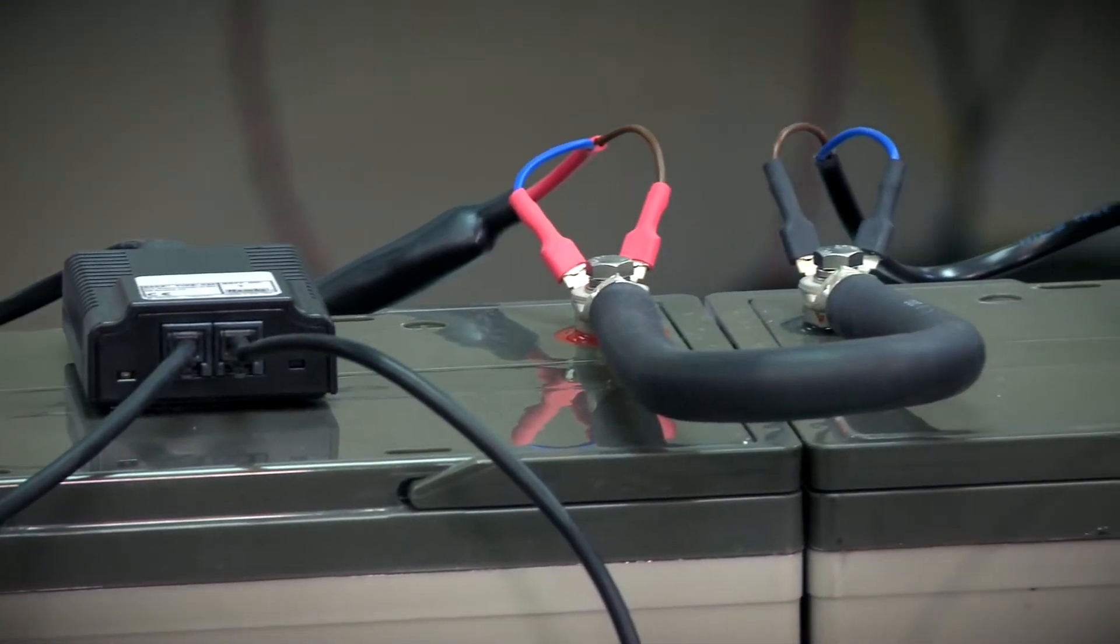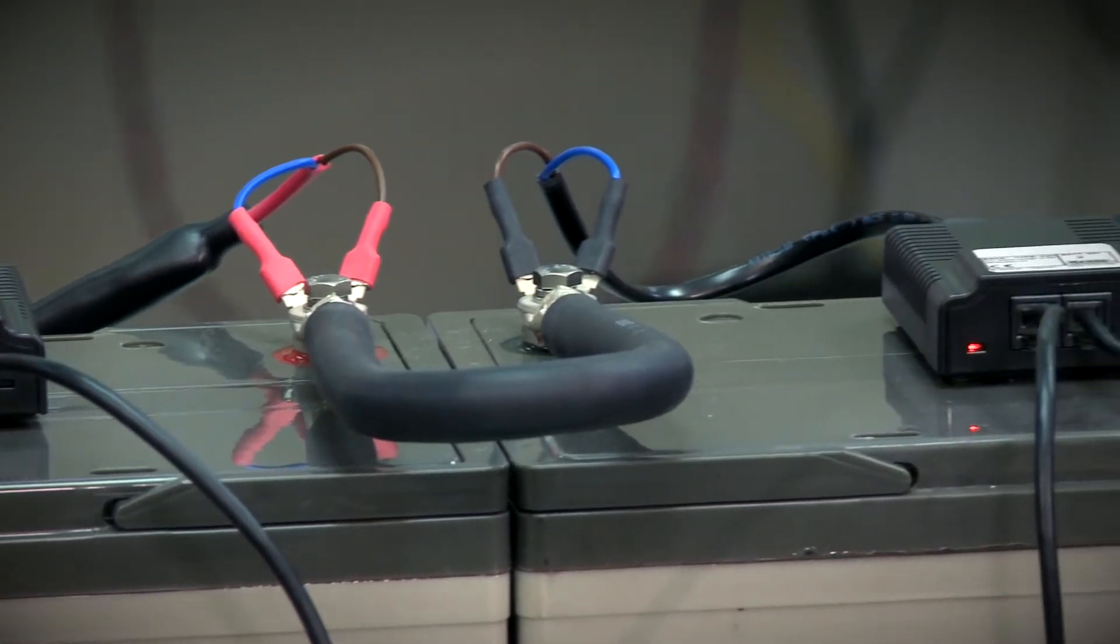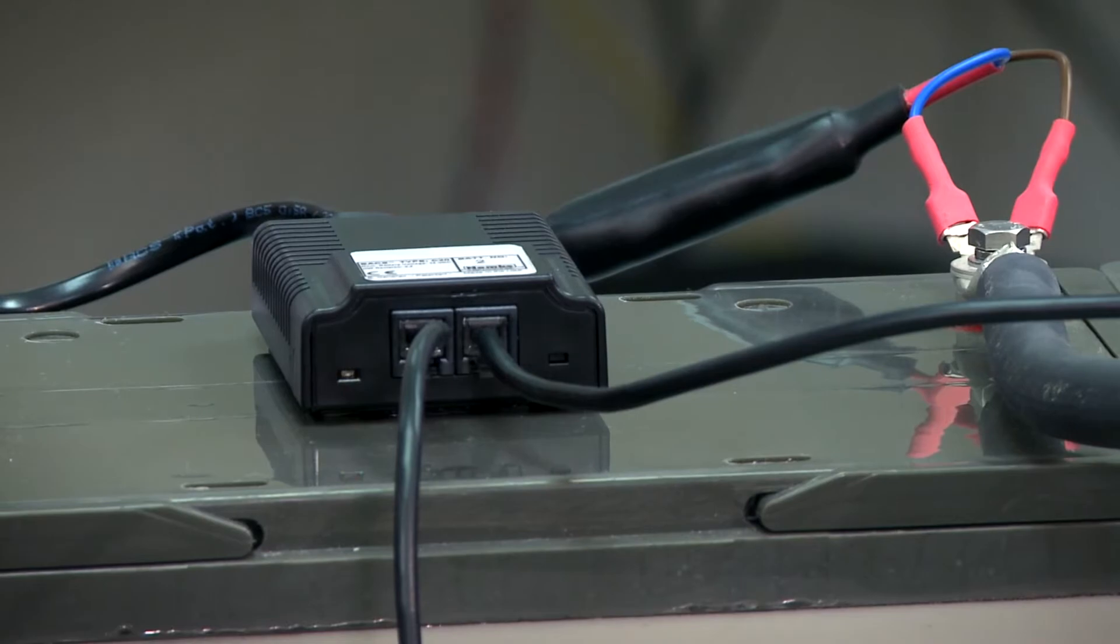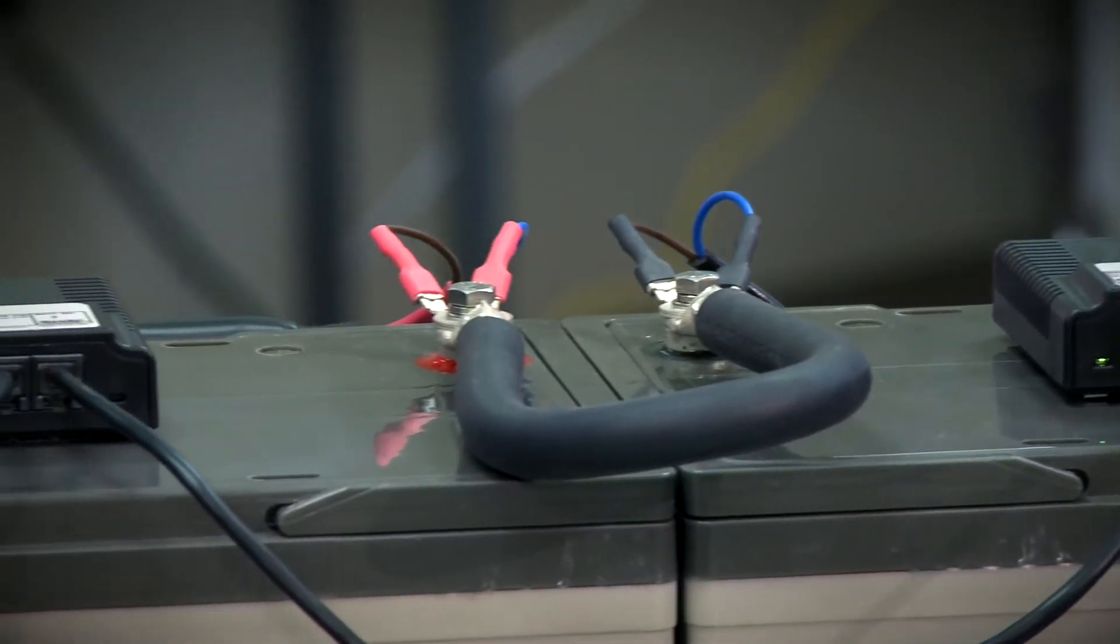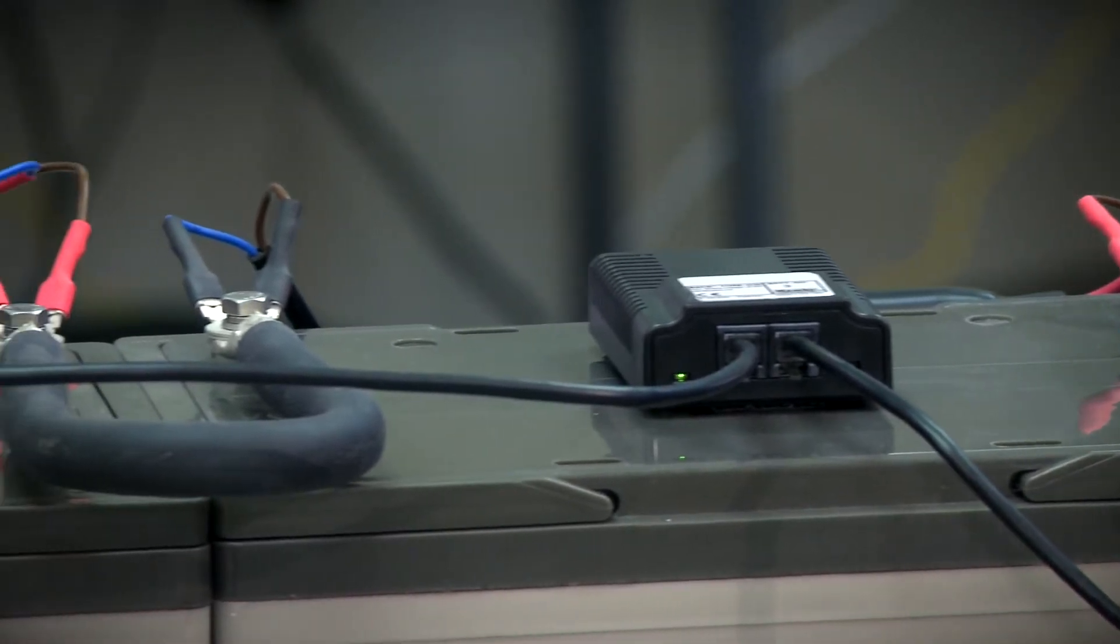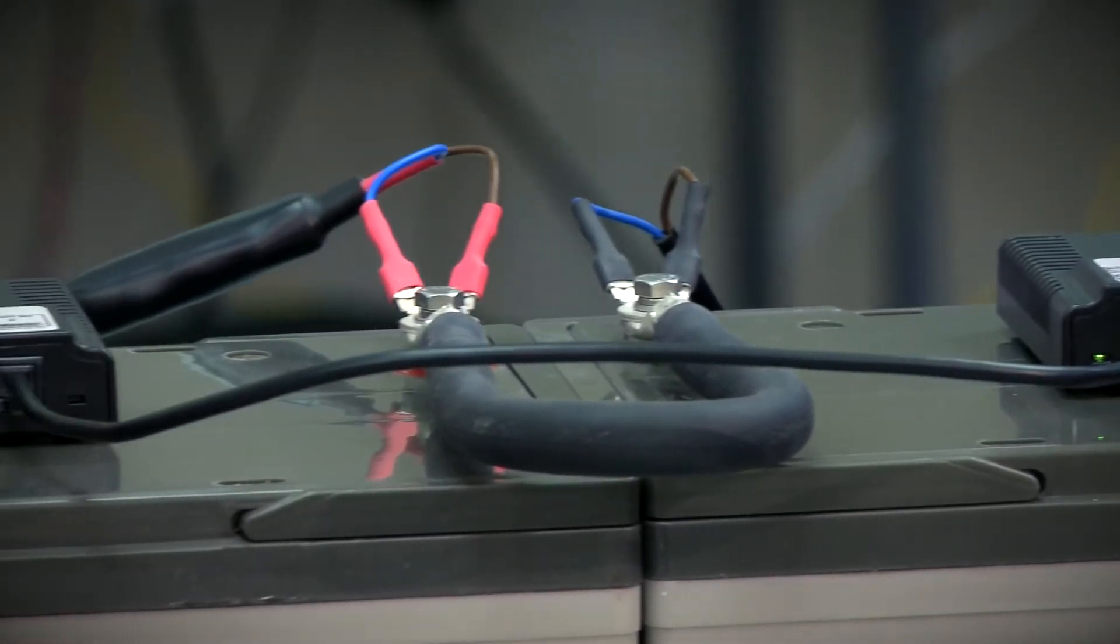Before starting the addressing, make sure all modules are slow blinking red. This is the default delivery status of our C modules. This mode shows that each module has been programmed with an address using the Bax programmer. Each module should be slow blinking green.